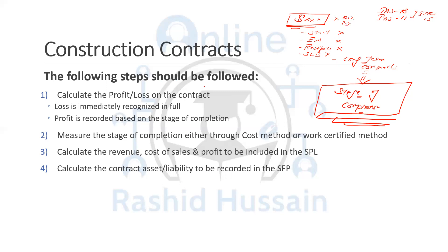In order to deal with the accounting of construction contracts, there are four steps. This is very important for the exam, both in terms of objective test case questions as well as the final account question, because usually we have an adjustment from IFRS 15 related to the construction contract within the final accounts.